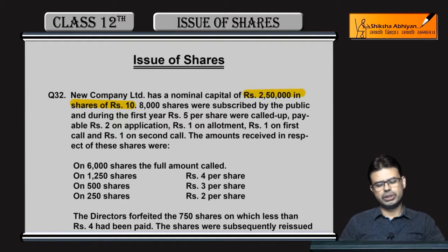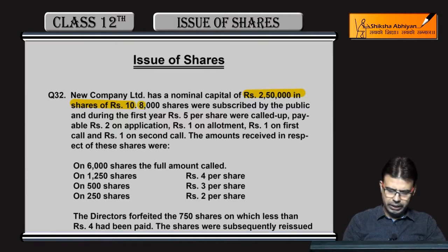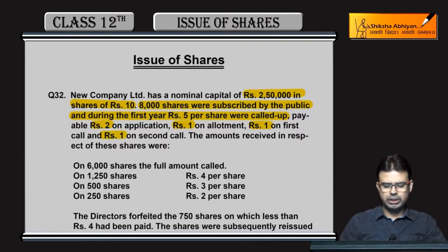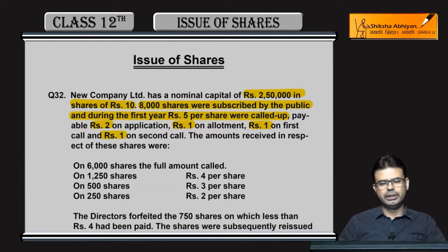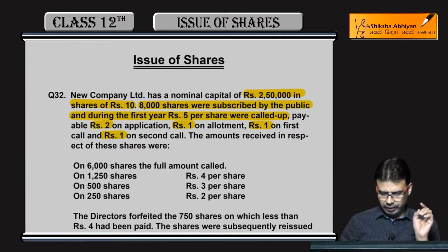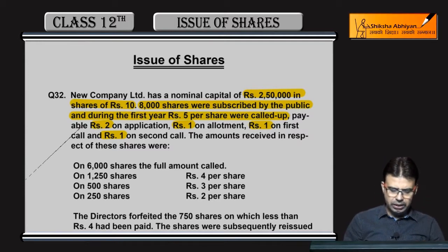25,000 shares total. At the moment, 8,000 shares were issued to the public. During the first year, calls were made: rupees 2 on application, 1 on allotment, 1 on first call, and 1 on second call. Only 6,000 shares received the full amount. Note: there is no money for the second call from remaining shares, so don't write the name of the final call for them.